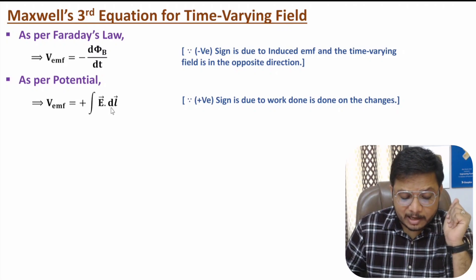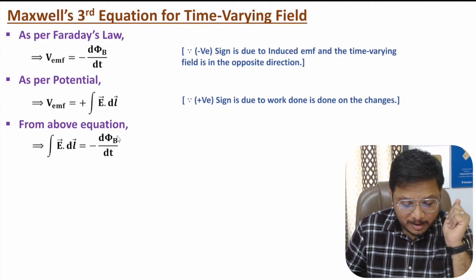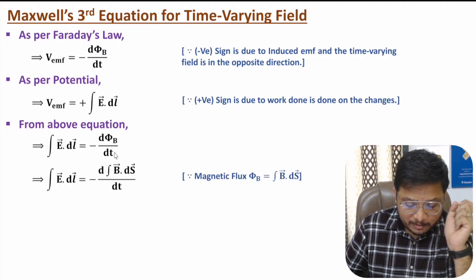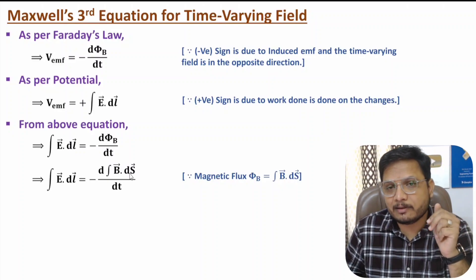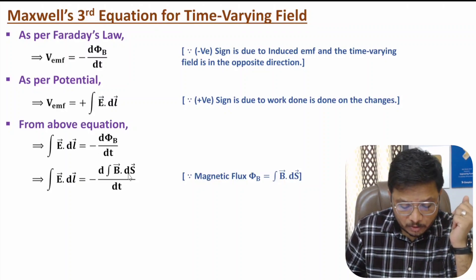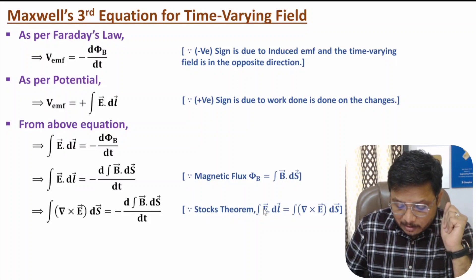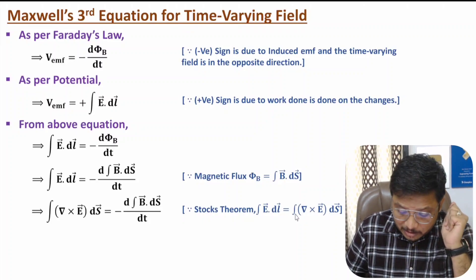Comparing the two equations, line integration of electric field equals minus the rate of change of magnetic flux with respect to time, where magnetic flux is the surface integration of magnetic field. The relation between line integration and surface integration can be resolved using Stokes' theorem: line integration of electric field equals the curl of electric field surface integration.